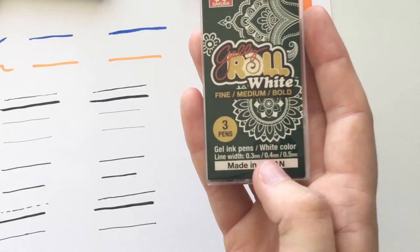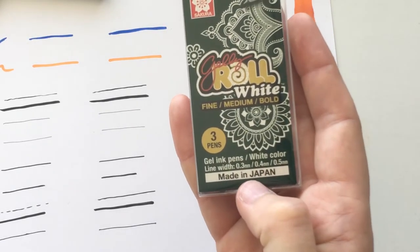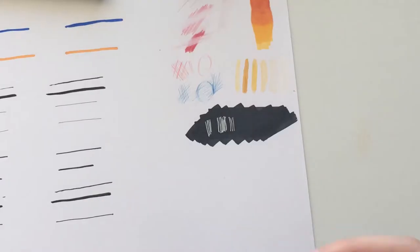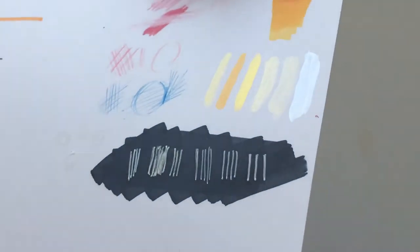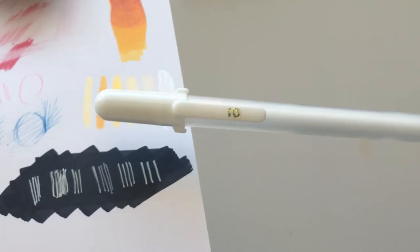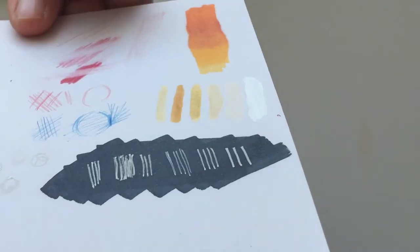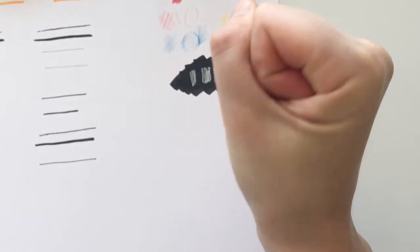I also bought the Jelly Roll in a variety pack of sizes. So there's the 0.3, the 0.4, and the 0.5 millimeter, also made in Japan. Japan seems to make all the cool art supplies. These are really really nice. They look even brighter in person. I especially like the bold one.